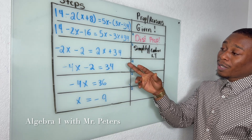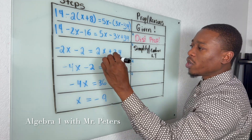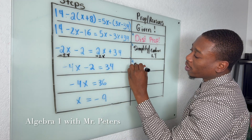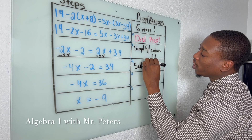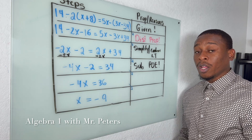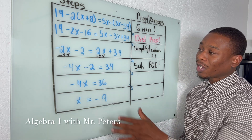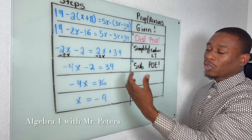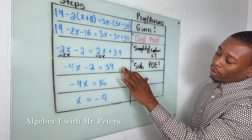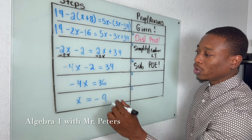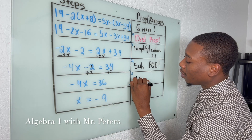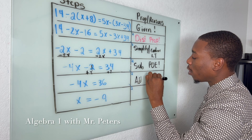From step three to step four, we noticed that they subtracted 2x from both sides. So now we could say they used the subtraction property of equality — I'll abbreviate that as P.O.E. From step four to step five, all they did was add two on both sides, so we would say the addition property of equality.